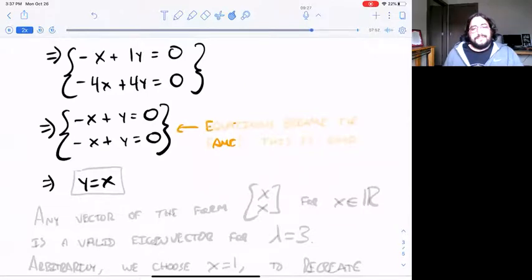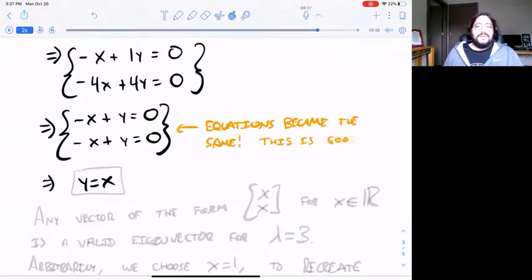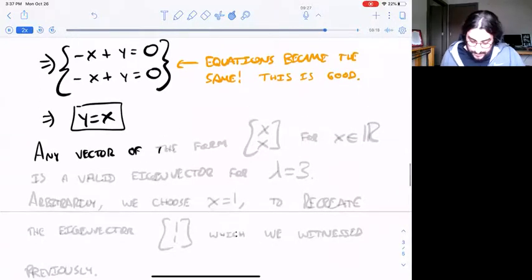This is a good thing. If you didn't get this where one of the equations disappears, then the only solution you're going to get is zero zero, which isn't a very interesting eigenvector.